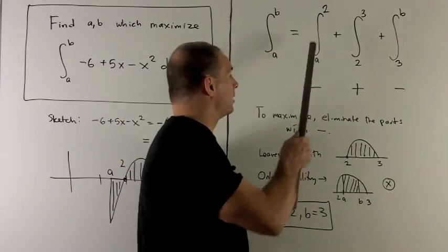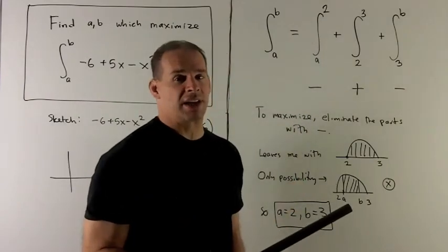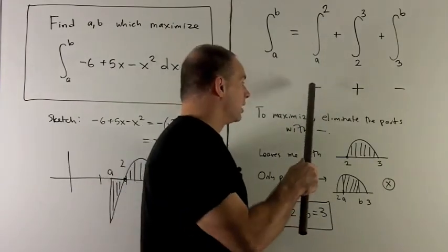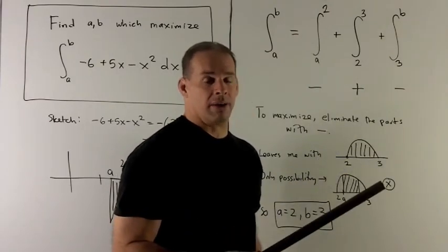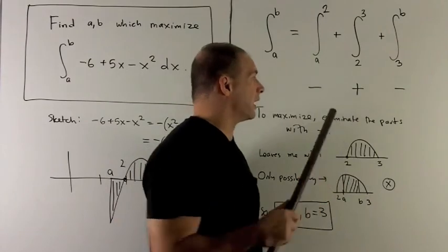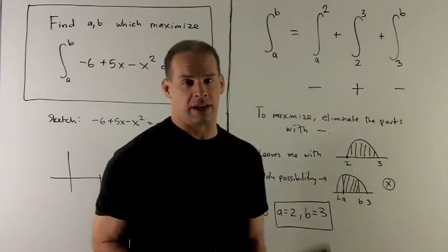So, for instance, if I go from a to 2, this is going to give me a region which is completely under the x-axis, and that's going to be a negative area. If I go from 2 to 3, that's the area above the x-axis, I get a positive area. As I go from 3 to b, I'm getting another region with a negative area.